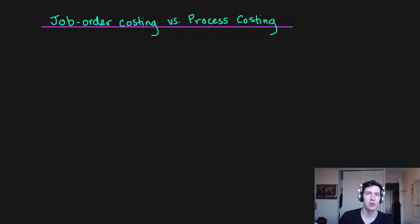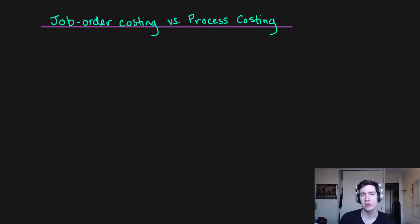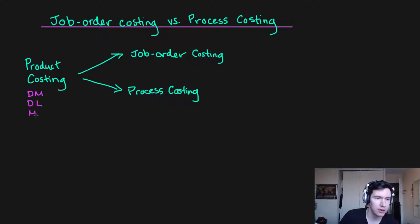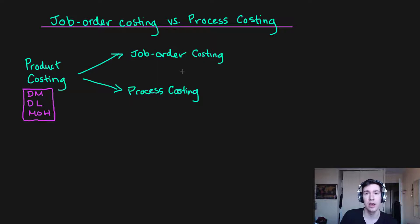Welcome back. In this presentation I want to go over the differences between job order costing and process costing. In managerial accounting we're looking at a lot of manufacturing firms, and one of the most common costs associated with manufacturing are product costs. Product costs are your direct materials, your direct labor, your manufacturing overhead, and all of these costs are going to be accumulated and assigned either using job order costing or process costing.